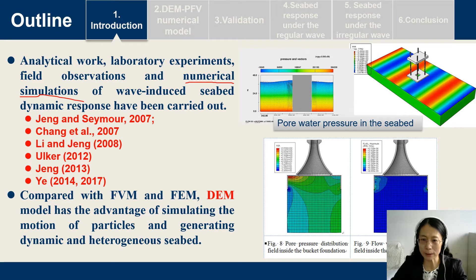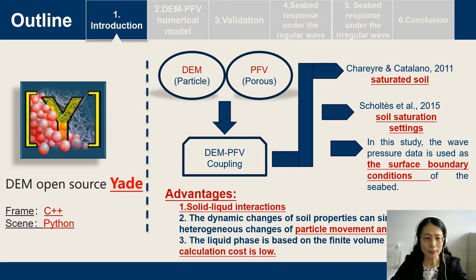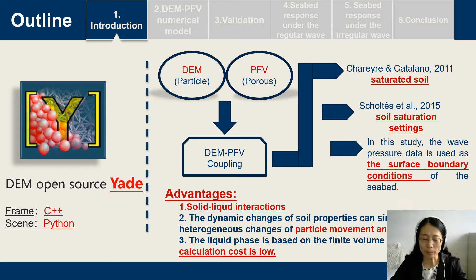For example, here is the pore pressure in the seabed around the offshore structure. Compared with FEM and FVM, the DEM model has advantages in simulating the motion of soil particles. In this study, we used the open-source DEM model to simulate the soil particles and the pore fluid model to simulate the porous seabed. Then we set up the DEM pore fluid coupling model to simulate the dynamic response of the seabed.